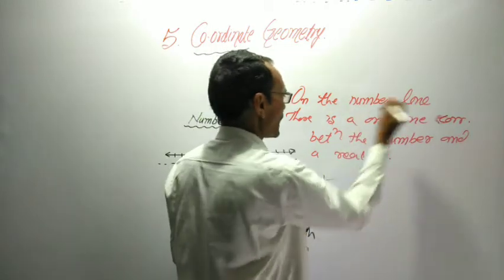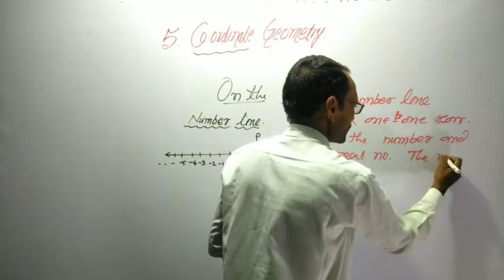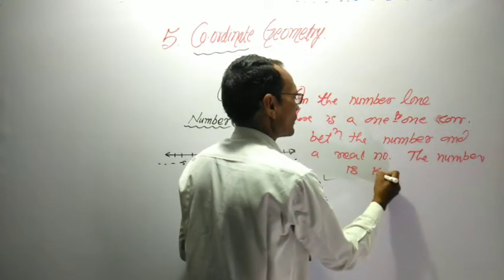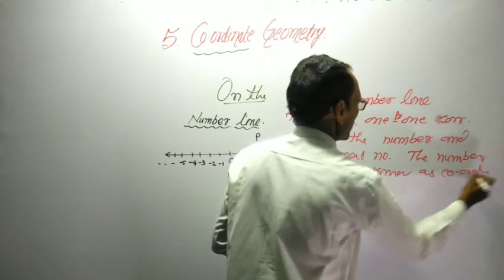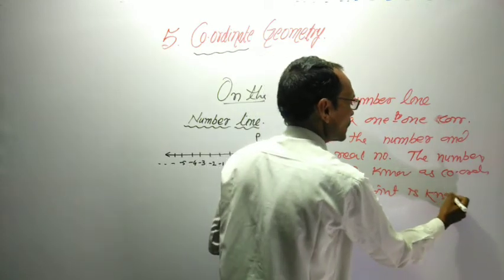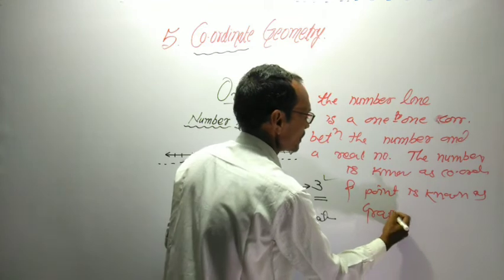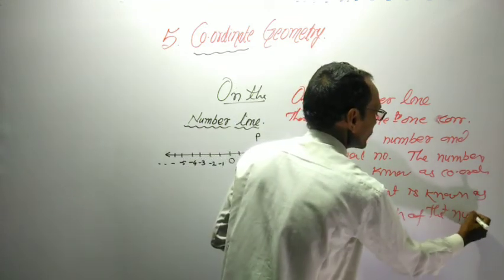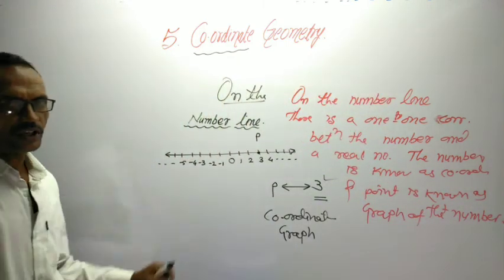On the number line, the number is known as coordinate and point is known as graph of that number. This is the definition in short.